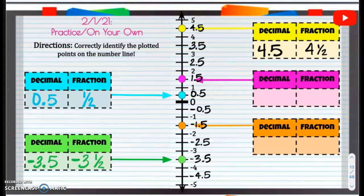All right, next one. We have that decimal here. So between 1 and 2, it's going to be 1 and 1 half, or 1.5. The fraction is going to be 1 and 1 half.